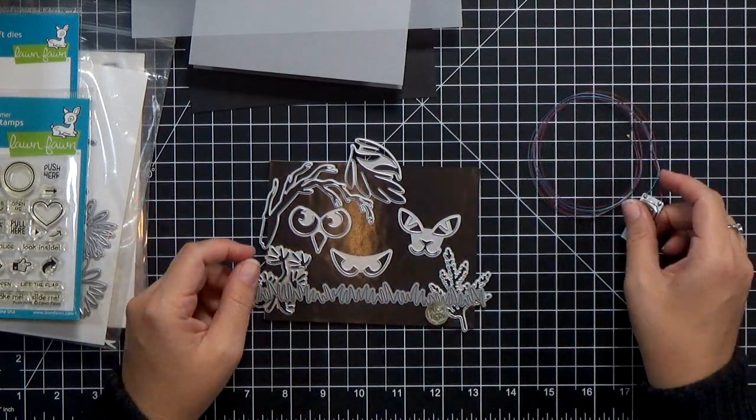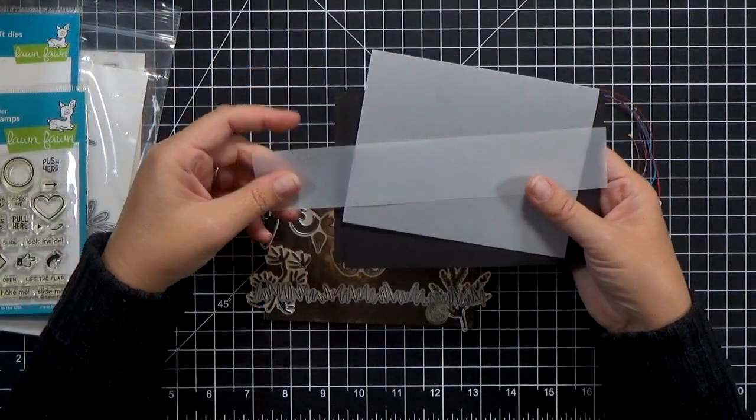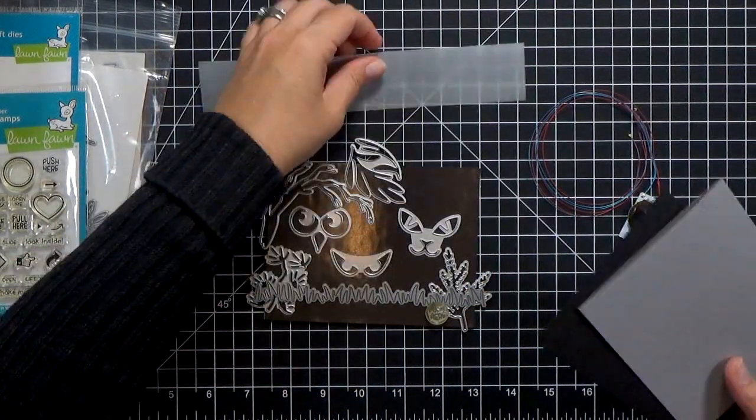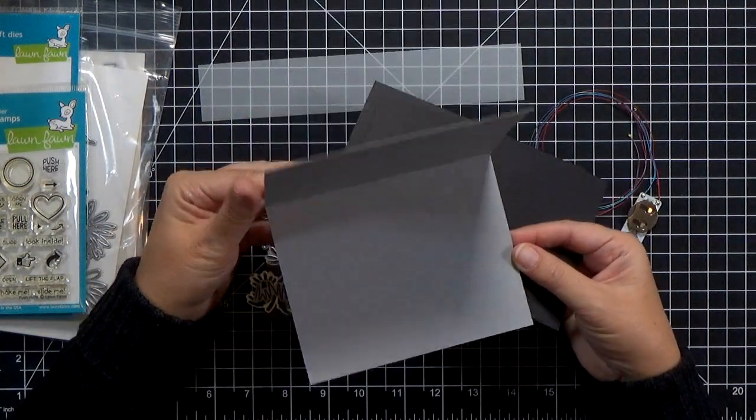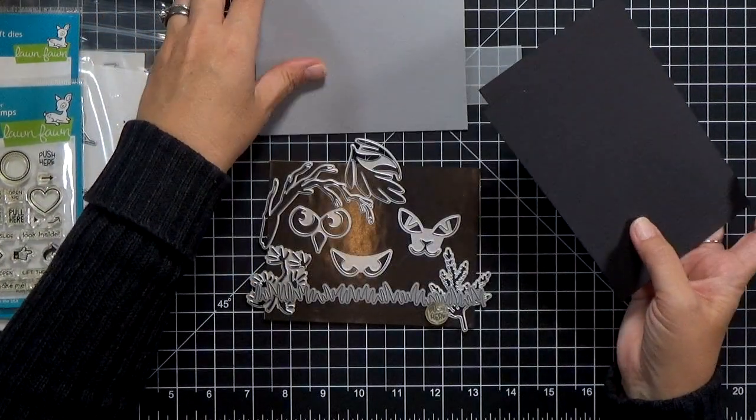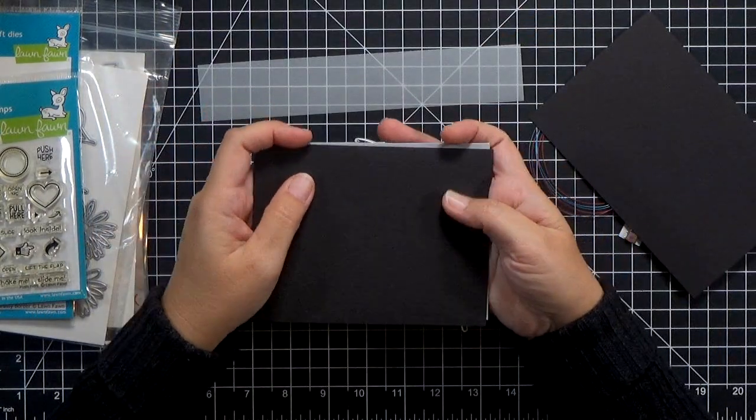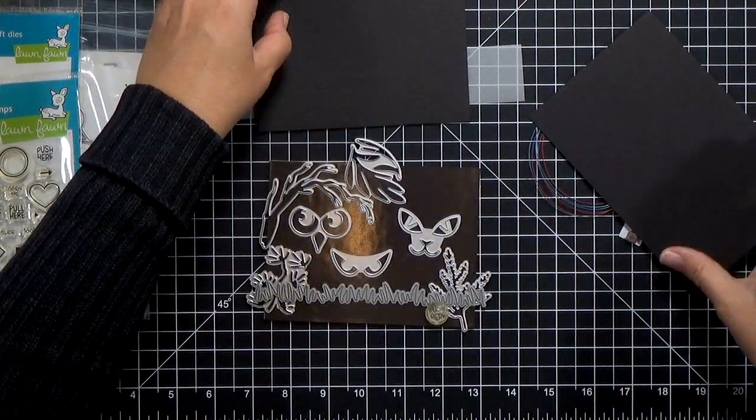Now, behind the cutout eyes, I want to put a little piece of vellum. So I've got a strip of vellum there. My card base is gray, it's A2 sized. And then I've got a card front there, that's what I'm going to build the scene on. And then I have another piece of black cardstock as well that I will die-cut all the floral pieces from.